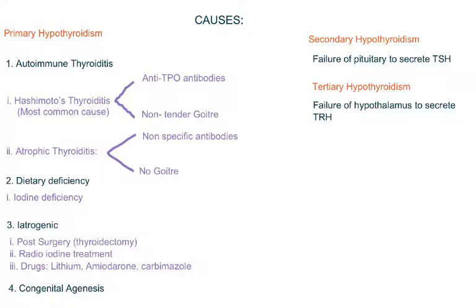Hashimoto's thyroiditis is more common than atrophic thyroiditis. Normally, the immune system forms antibodies that fight against foreign pathogens like bacteria and viruses. But sometimes, unfortunately, the immune system forms autoantibodies that attack the body's own tissue. In autoimmune thyroiditis, autoantibodies are formed against the body's own thyroid gland, so the thyroid gland will get inflamed.